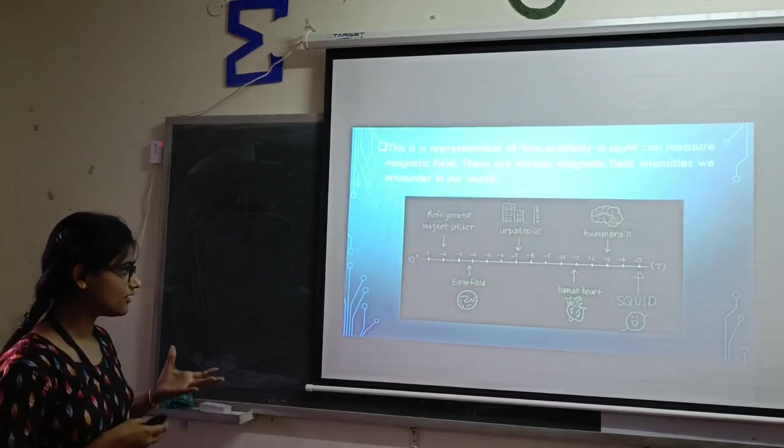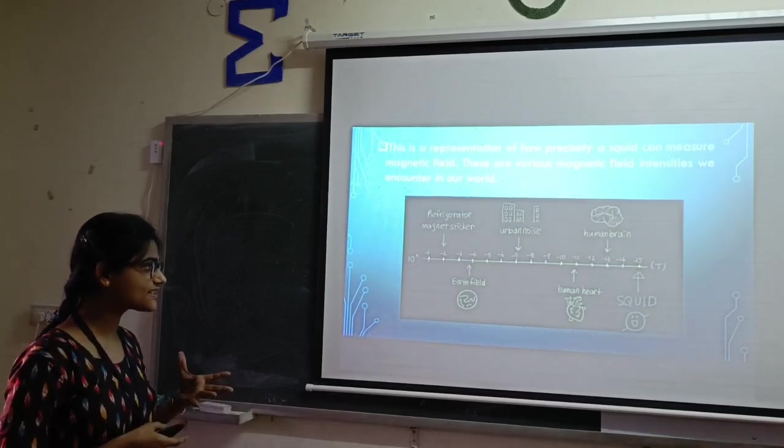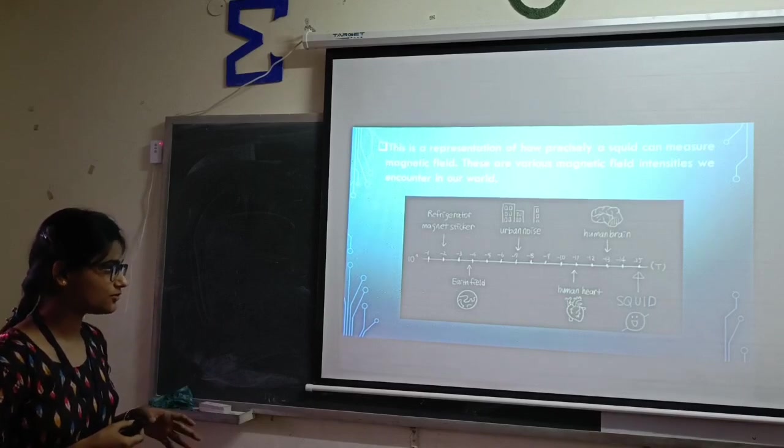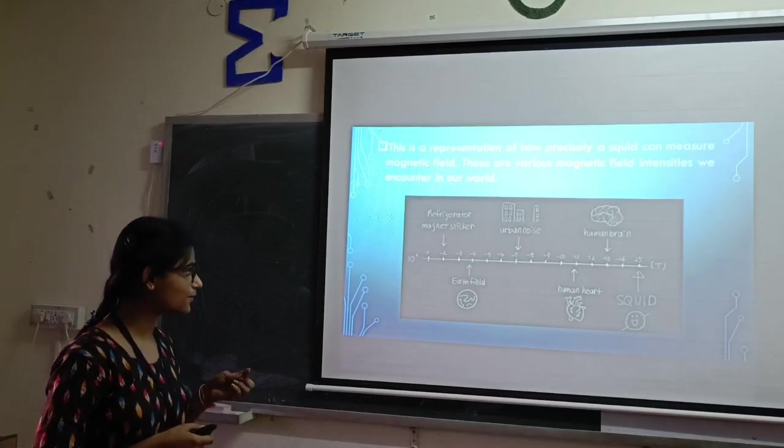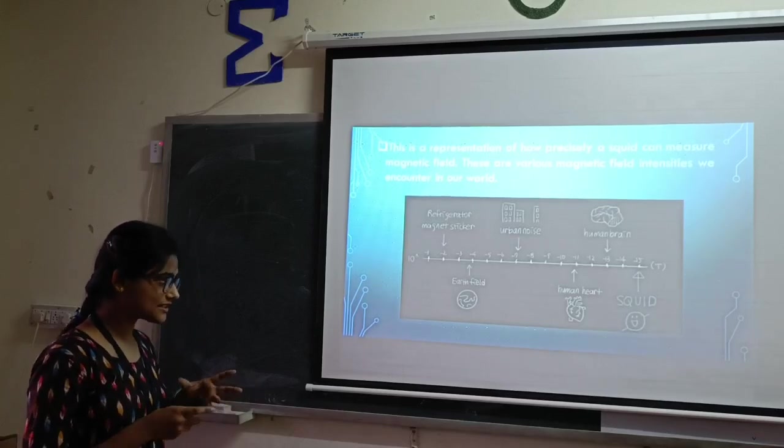Geomagnetic, urban noise, human heart, and human brain can produce 10 to the power minus 2, 10 to the power minus 4, 10 to the power minus 7, respectively.